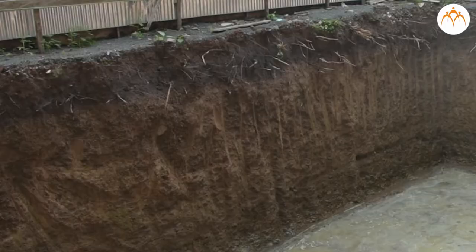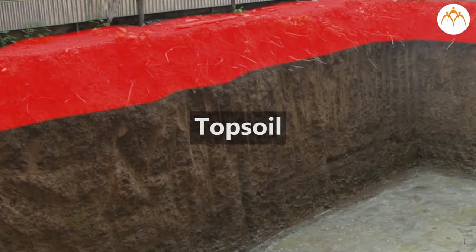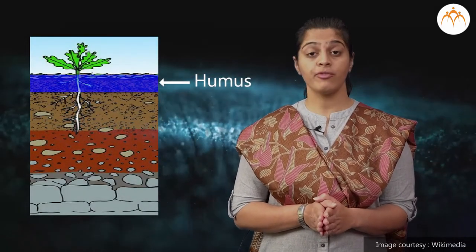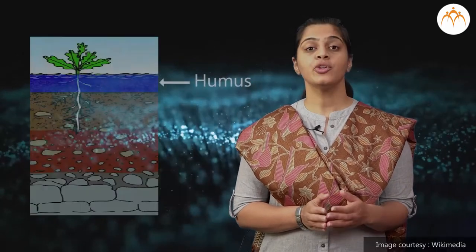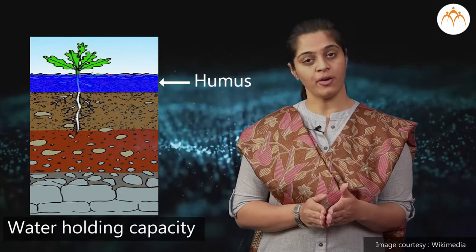The soil in the crust region also shows specific layers as shown in this picture. Beginning from the top, these layers of soil seen on the land could be broadly grouped as topsoil, subsoil, and bedrock. The surface of the topsoil layer is composed of humus, which is a rich organic matter formed by decomposition of dead and decaying plant and animal matter. Humus improves the fertility and water holding capacity of the soil.